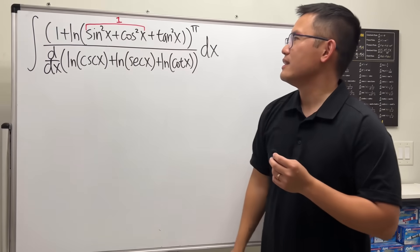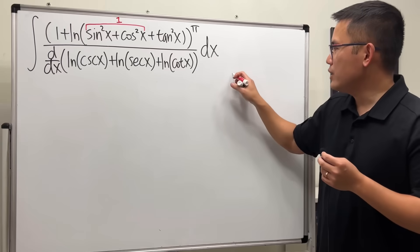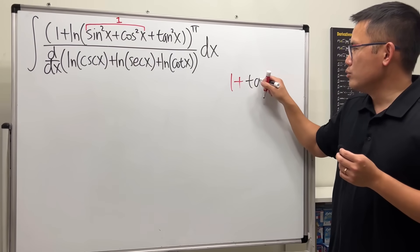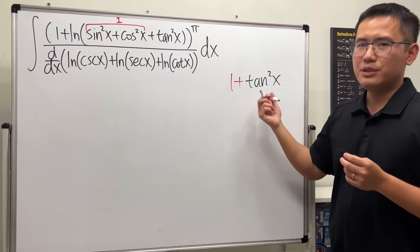Very nice. And then if you look at 1 plus tangent squared, do you remember the identity? This is just secant squared.